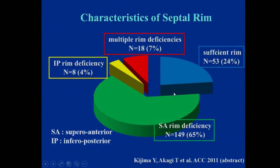In our echocardiographic analysis, patients with all rims sufficient — meaning all rims more than 5mm — represent only a quarter of patients. Conversely, nearly 60 to 70% of patients have a superior anterior rim, meaning aortic rim deficiency less than 5mm. Another 4% had inferior posterior rim deficiency, and 7% had multiple deficiencies — that is, anterior plus posterior rim deficiencies.